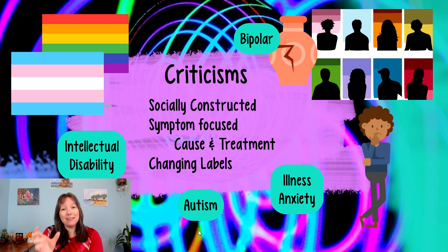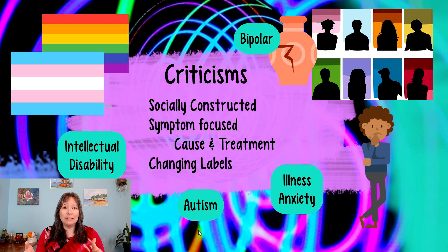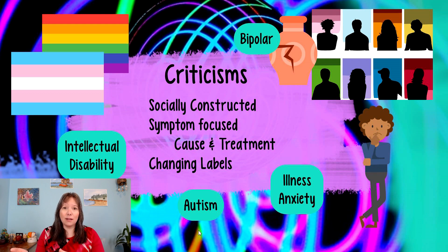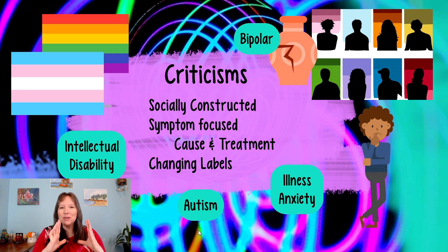There have also been changes to autism spectrum disorders. Previously there was a diagnosis of Asperger's, but that has been removed and it's now all considered autism spectrum disorder. This can be really challenging for a person who deeply embraced the label of Asperger's and saw it as qualitatively different from autism. Additionally, what we now know as illness anxiety disorder was previously called hypochondria, which was considered a heavy and problematic label implying the person was causing their own illness — we now know that's definitely not the case.